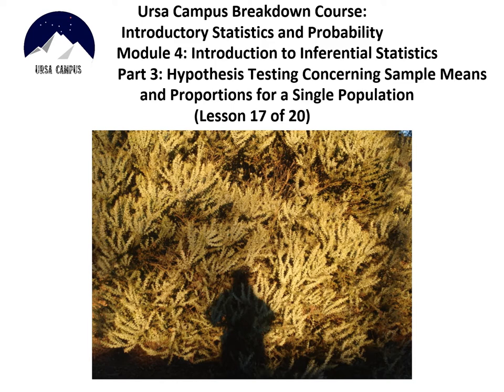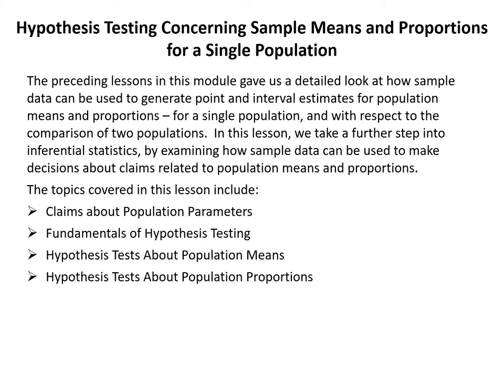The preceding lessons in this module gave us a detailed look at how sample data can be used to generate point and interval estimates for population means and proportions for a single population and for the comparison of two populations. In this lesson we take a further step into inferential statistics by examining how sample data can be used to make decisions about claims related to population means and proportions. Topics covered include claims about population parameters, fundamentals of hypothesis testing, hypothesis tests about population means, and hypothesis tests about population proportions.